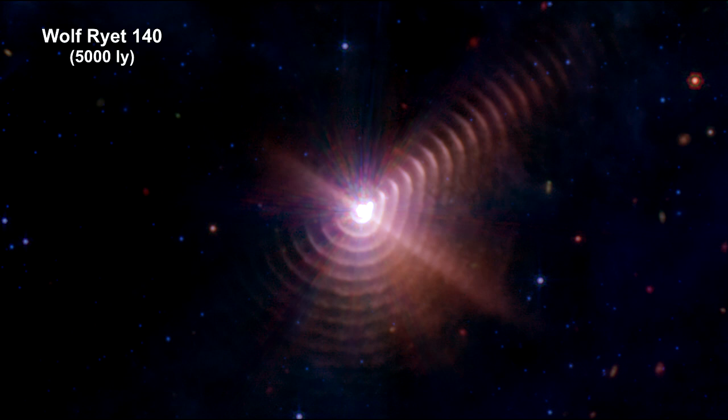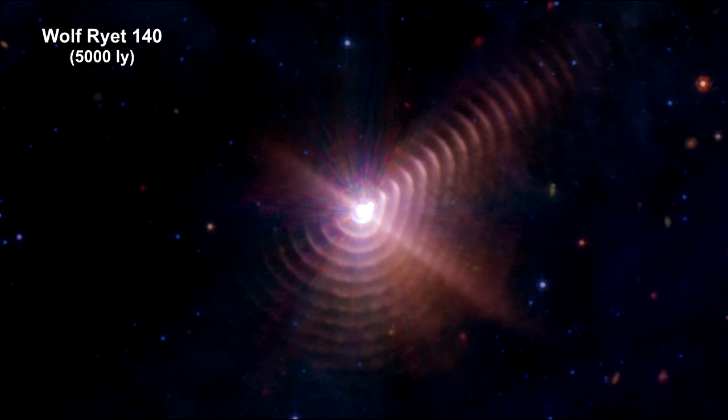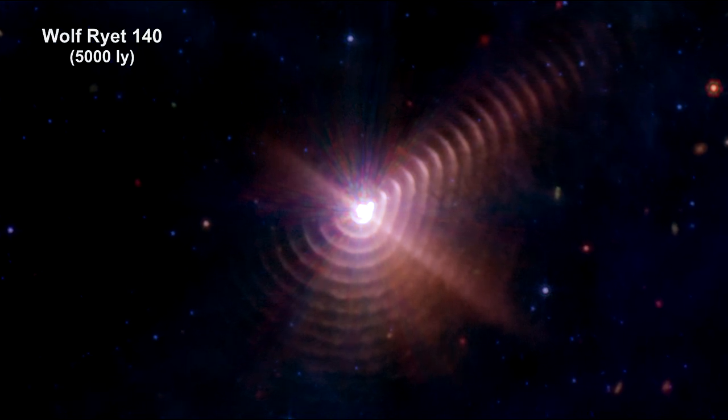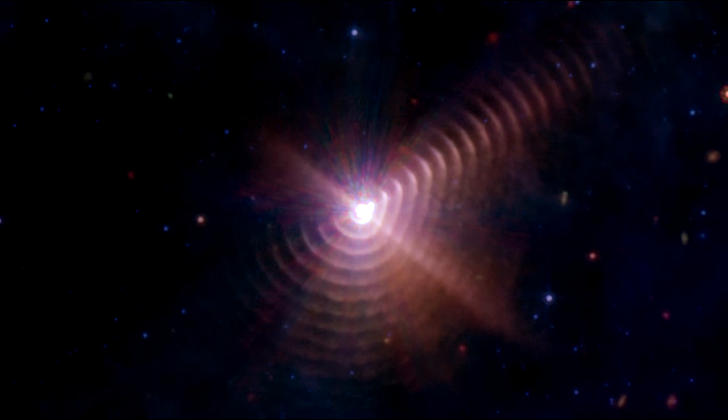A new image from Webb reveals a remarkable binary star system, with one of them being a Wolf-Rayet star, known as Wolf-Rayet 140. It shows at least 17 concentric dust rings emanating from the pair of stars.